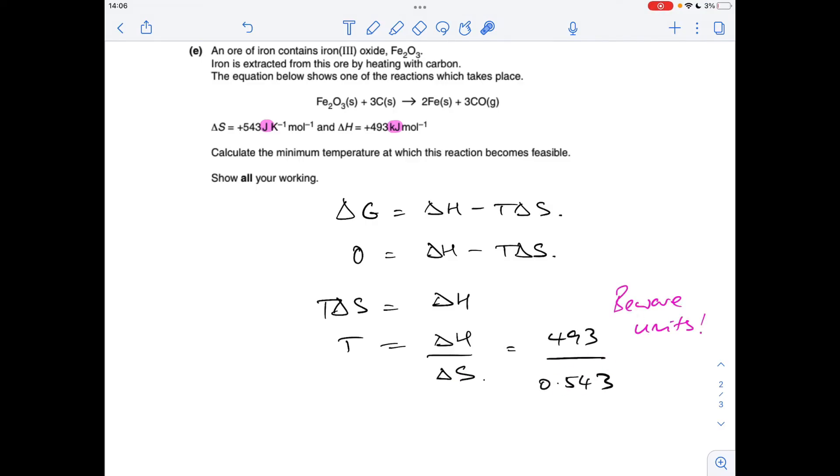So there's the numbers in. I've written up beware units because that's why I've highlighted these. The units of ΔS have got joules in, whereas the units of ΔH have got kilojoules in. So you've got to make your units consistent. So I've turned everything into kilojoules. So I've divided the joules by 1,000, and that's why I've gone to 0.543 for my ΔS. Now, they haven't specified which temperature units they want, so I've given you both answers there. So the temperature, the minimum temperature at which this reaction becomes feasible, in other words when ΔG becomes zero, 908 Kelvin or 635 degrees C.